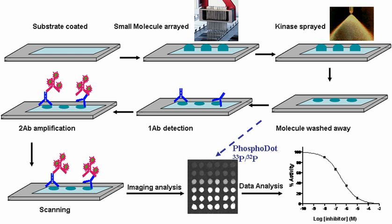There are three different forms of chemical compound microarrays based on the fabrication method. The first form is to covalently immobilize the organic compounds on the solid surface with diverse linking techniques. This platform is usually called small molecule microarray, which is invented and advanced by Dr. Stuart Schreiber and colleagues.